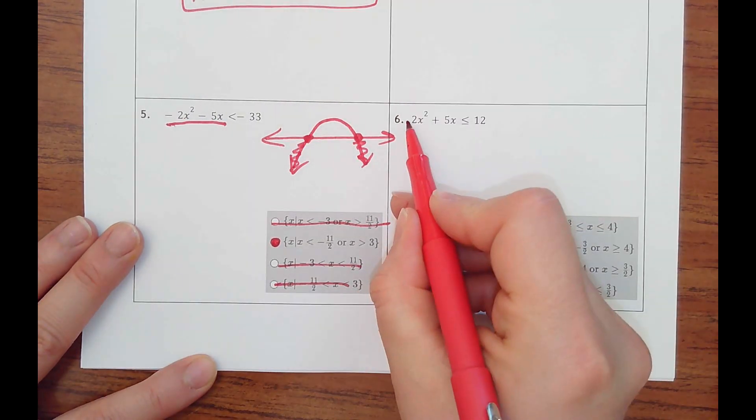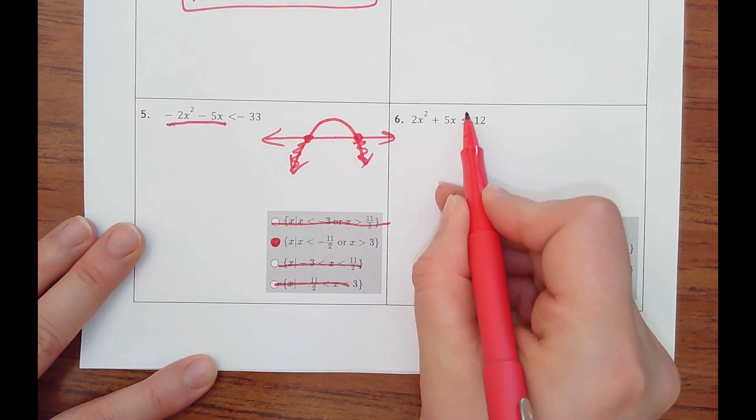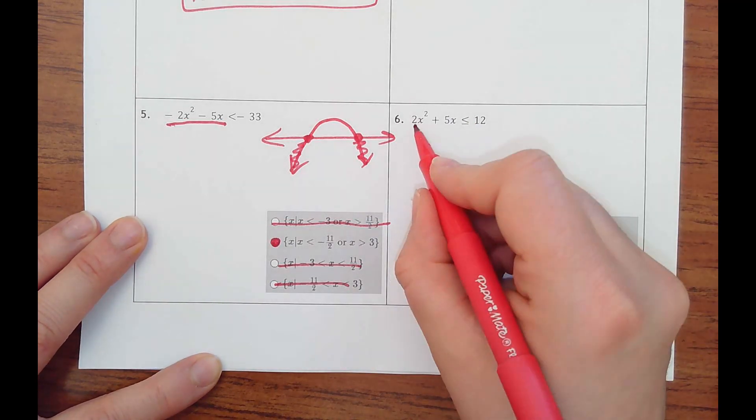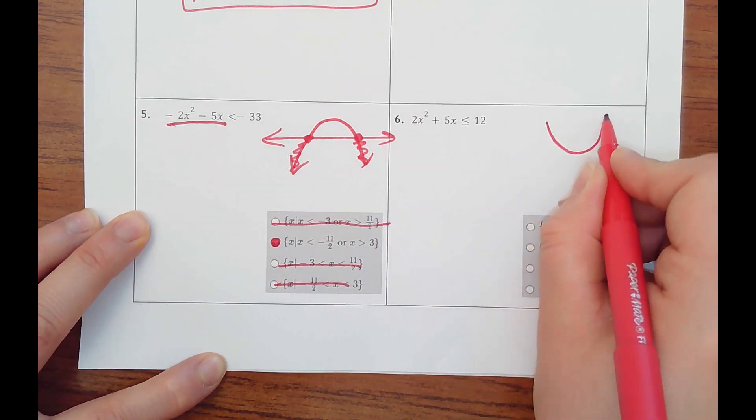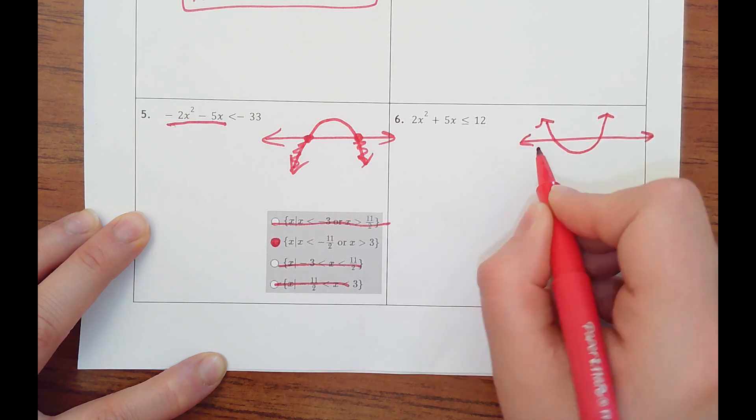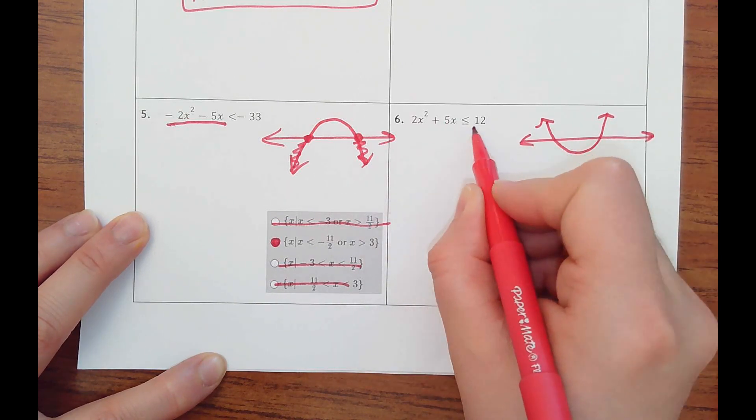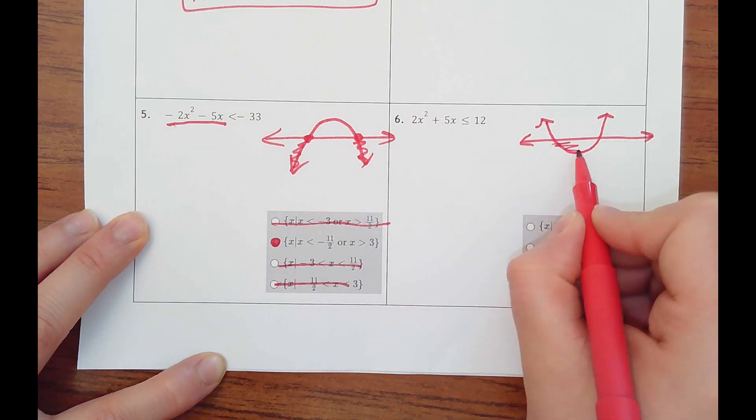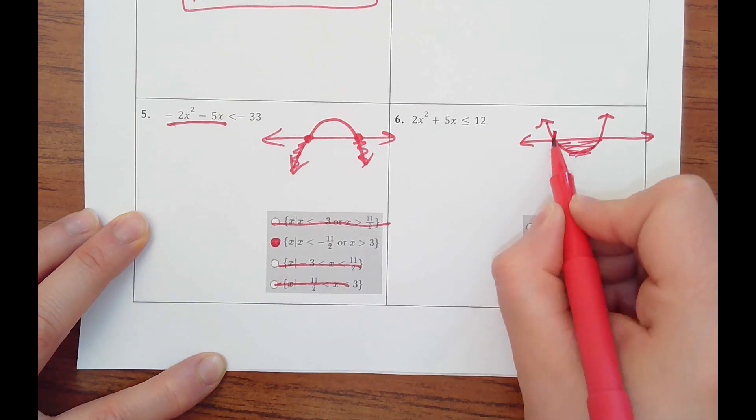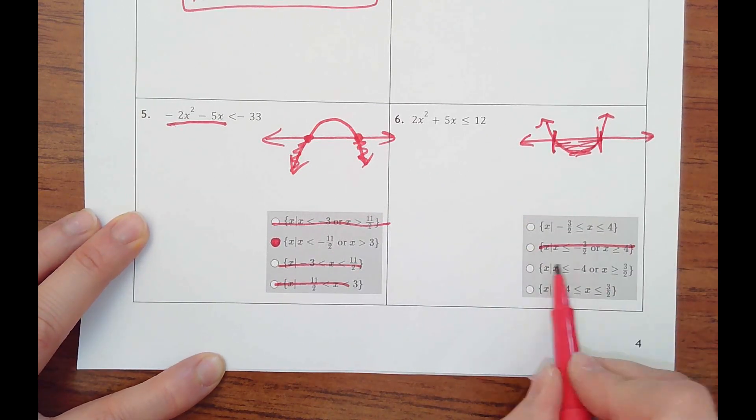On number six, since there's no negative in front to divide by, this is going to be an and because this is positive. Say my parabola opens up and then I'll have my horizontal line. I want to know where is this function less than 12. So it would be all below, it's going to be between here and here. So take out the ors.